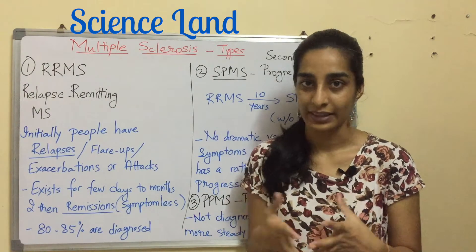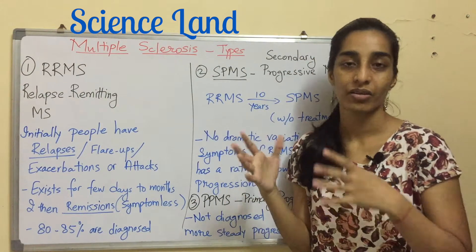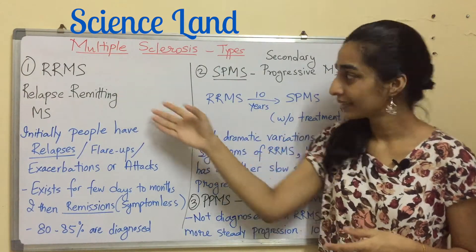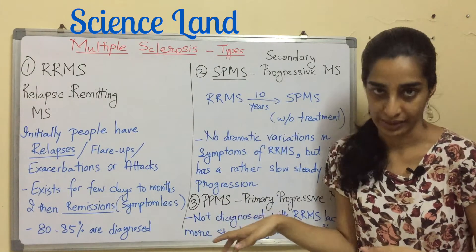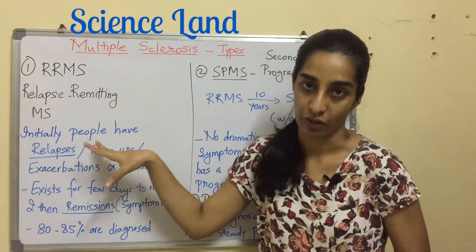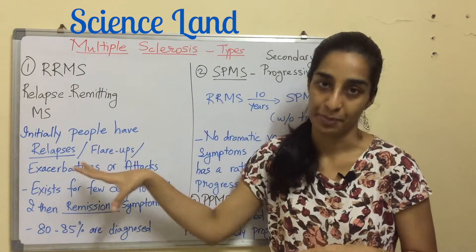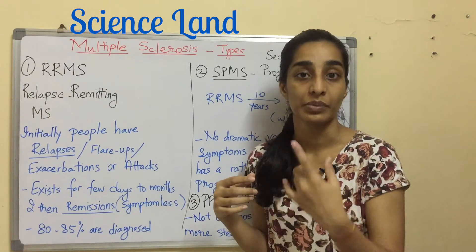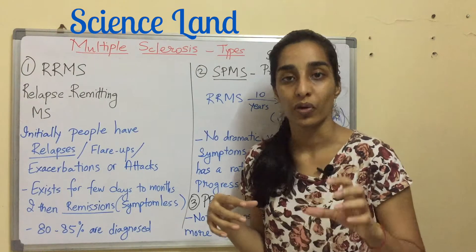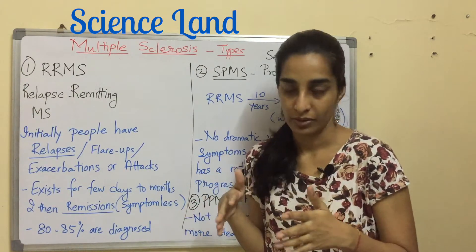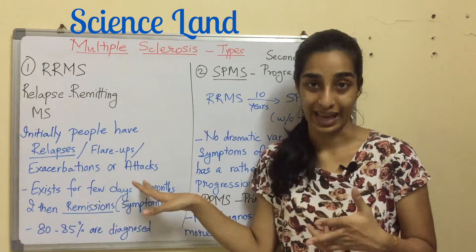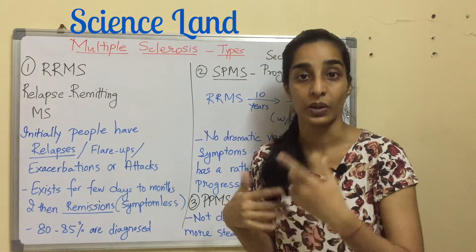Now let's talk about the types of multiple sclerosis. There are three prominent types: RRMS, SPMS, and PPMS. RRMS is relapsing-remitting multiple sclerosis. Initially people have relapses — when a new symptom occurs or existing symptoms worsen, that period is known as a relapse. Relapses are also known as flare-ups, exacerbations, or attacks, wherein the symptoms will worsen over time.